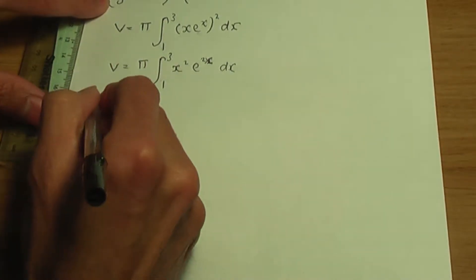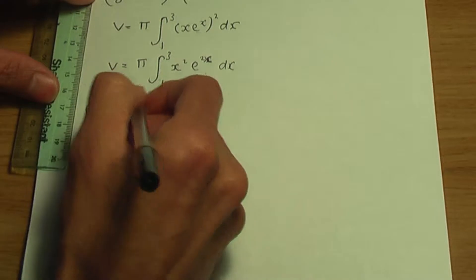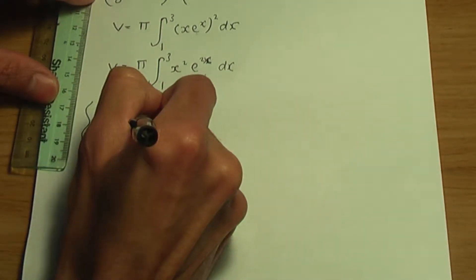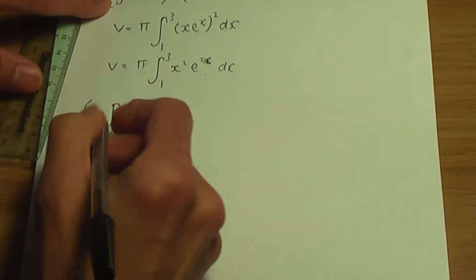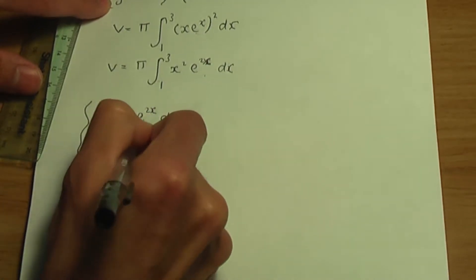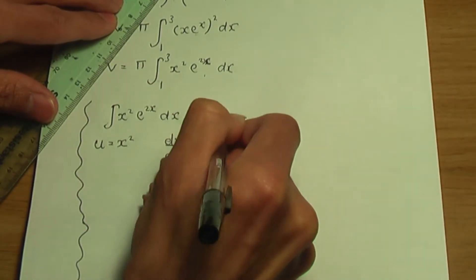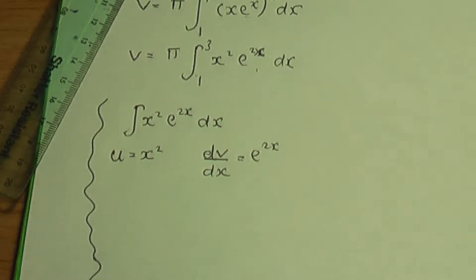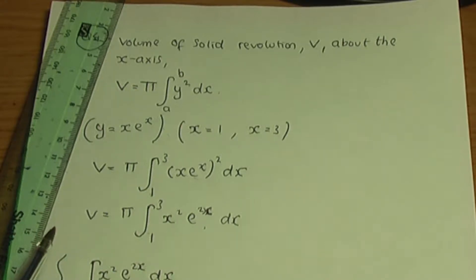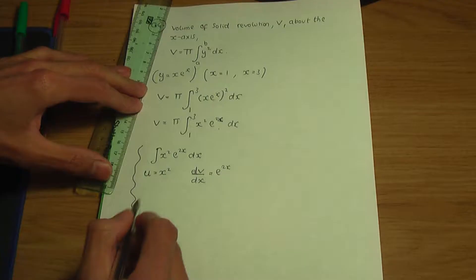We need to use integration by parts. I'm going to do a side calculation, ignoring the limits and the pi for now, and integrate x squared e to the 2x by parts. I have created separate videos on integration by parts and on volume of solid revolution — links are in the description below.